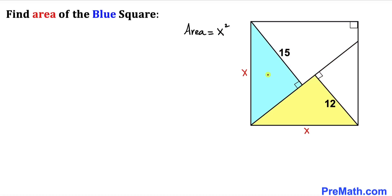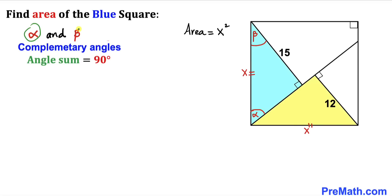Let's focus on these two triangles — the blue one and this yellow one. We know that both of these are right triangles, and moreover this side length equals this side length. Let me call this angle alpha, and since this is a 90-degree angle I'm going to call this angle beta, such that alpha and beta are complementary angles — meaning the sum of these two angles is going to be equal to 90 degrees.